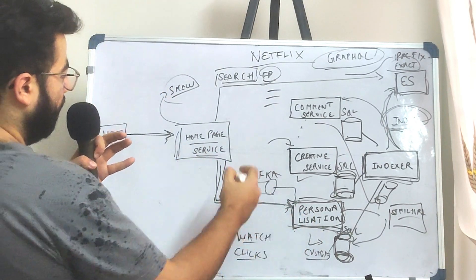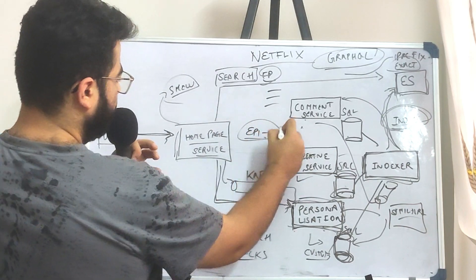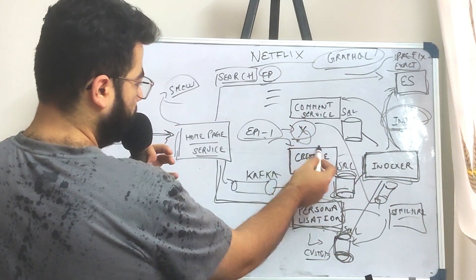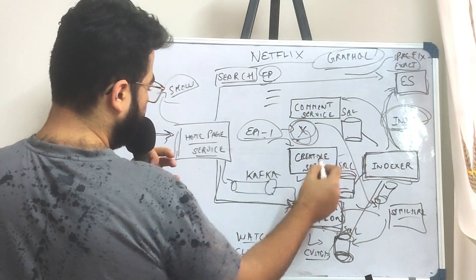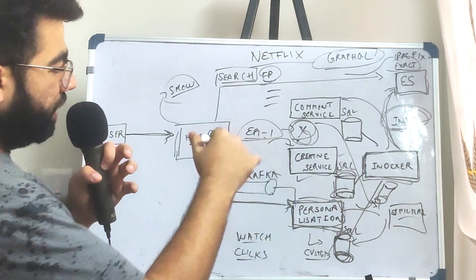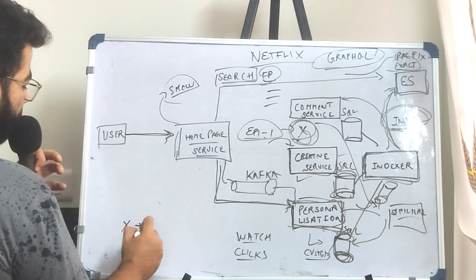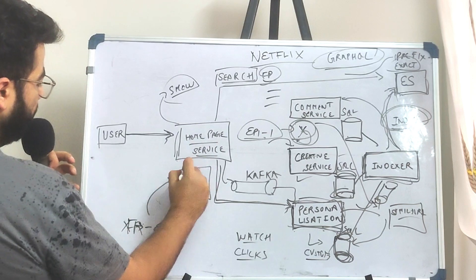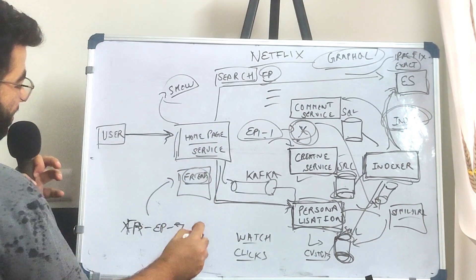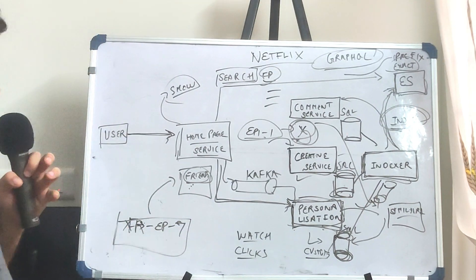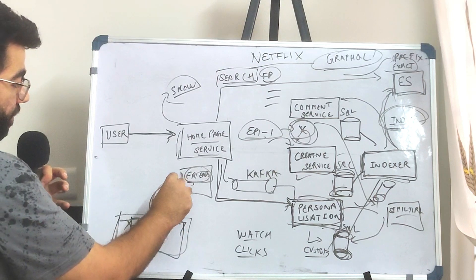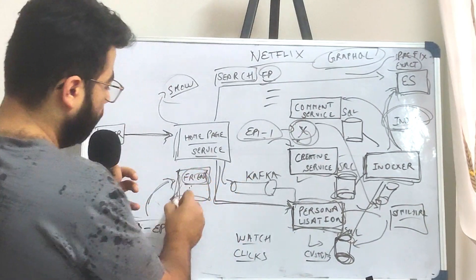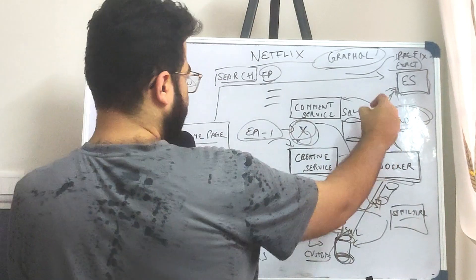For example, suppose you were watching episode one of a show and it has an ID 'x'. The indexer gets the event for 'x', fetches the data corresponding to 'x', and tries to find the parent from that data. For example, if 'x' was Friends episode seven, its parent would be the Friends series itself. So the indexer knows it has to update the index for the show called Friends, and it fetches all data regarding that show and re-indexes it into Elasticsearch.